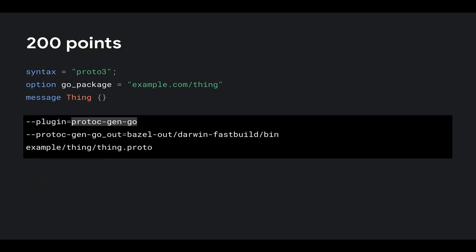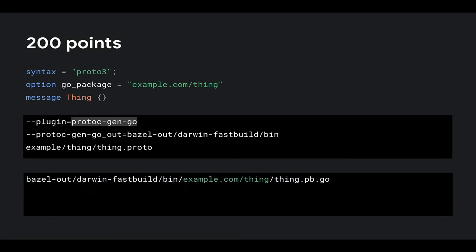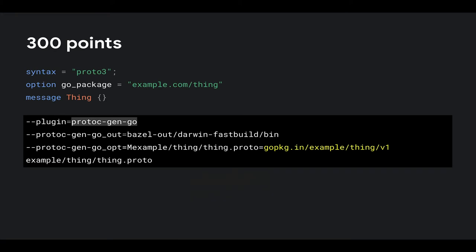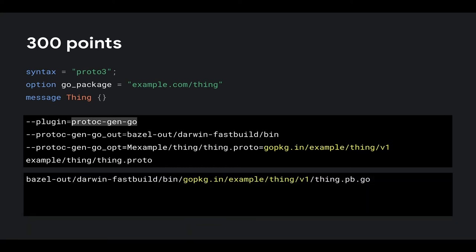In the next example, we've introduced the go_package option, and indeed the proto file is relative to that go_package option. Now in the third example for 300 points, go_package is the same, but we've introduced this M or mapping option, and when we run this, it overrides everything else.